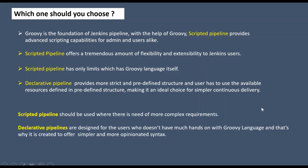In conclusion: wherever there are complex requirements and your team is well-versed with Groovy language, go with the scripted pipeline. However, if you're working in an environment where developers are not very familiar with Groovy, go with declarative pipeline — it's easy to write, more structured, the steps are clear, and anyone can easily understand what is written inside. Personally, I prefer declarative and suggest you try both, but go for declarative — it's new, predefined, easy, and crystal clear.